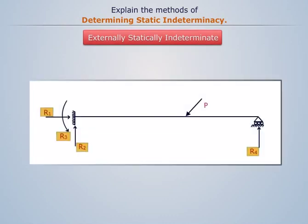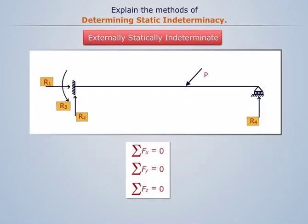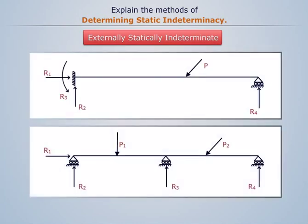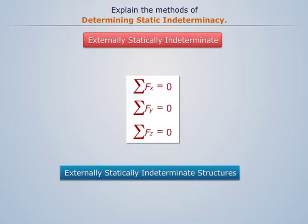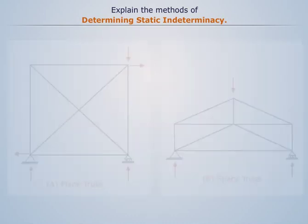If the number of reactions exceeds the number of equilibrium equations, then the structure is externally indeterminate. We can see the beams A and B have four reaction components, but the equilibrium equations are only three. Hence, the beams are externally indeterminate.